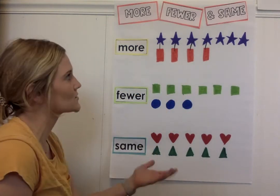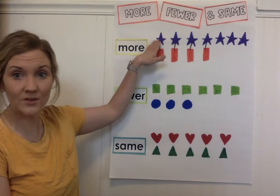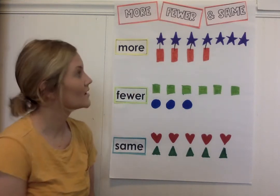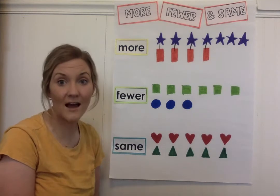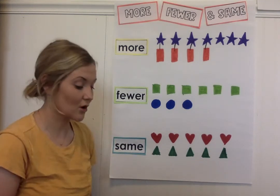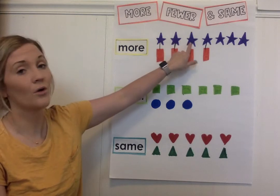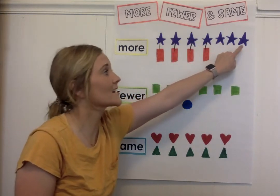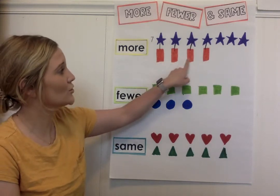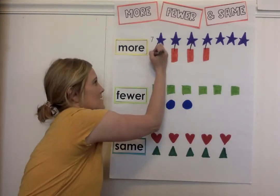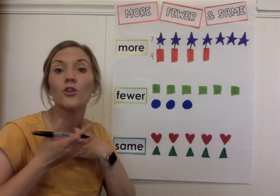So what do we notice? If there are all of these purple stars that don't have a buddy, does that mean we have more purple stars or more orange rectangles? It's more purple stars. See how these guys don't have buddies? There are so many of them that not all of them can have a buddy — so they're sad because there's more of them. Let's count how many stars there are: one, two, three, four, five, six, seven. We have seven purple stars. Let's count the orange rectangles: one, two, three, four. So we've decided there are more purple stars because some are left over without buddies — there's more of them.